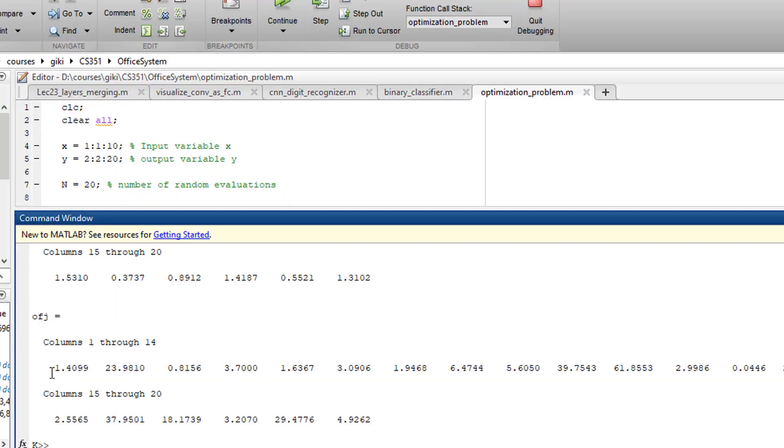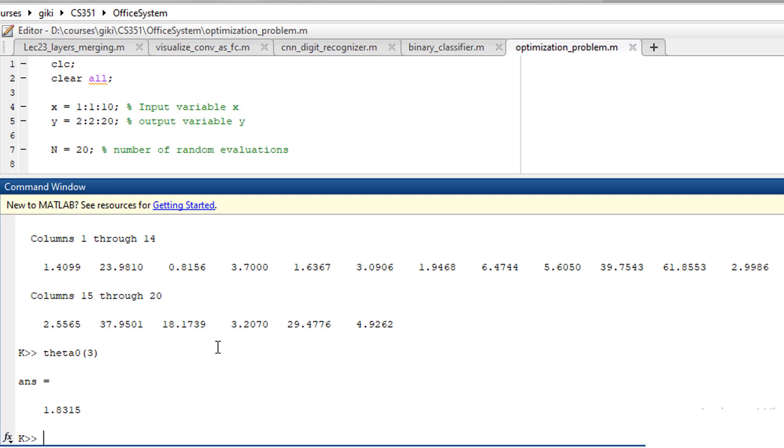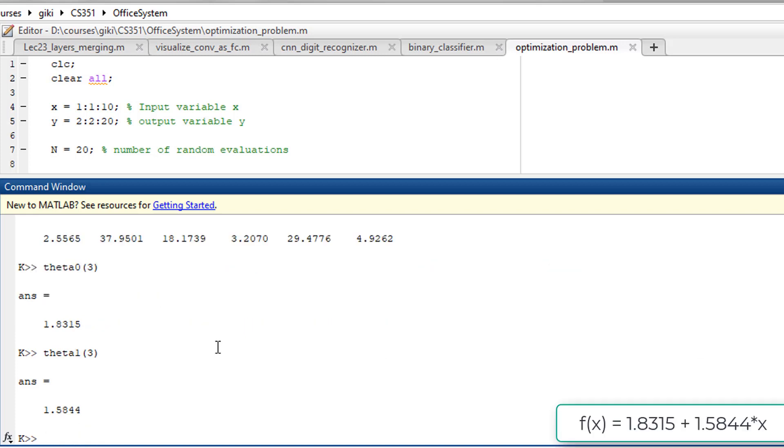If we run the simulation we can see that for some values of theta 0 and theta 1 the cost is not high compared to others. For example we can see that the third guess of theta 0 and theta 1 yielded the current setting. It seems that this suggests that f of x is equal to 1.8315 plus 1.5844 times x.